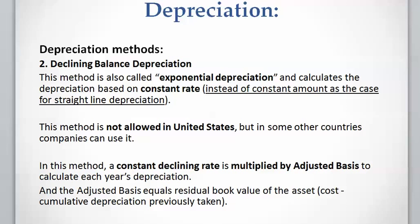Declining balance depreciation considers a constant depreciation rate. In straight line, the depreciation amount was constant. Here, for the declining balance, the depreciation rate is constant over the years. In this method we multiply the constant declining rate by the adjusted base.